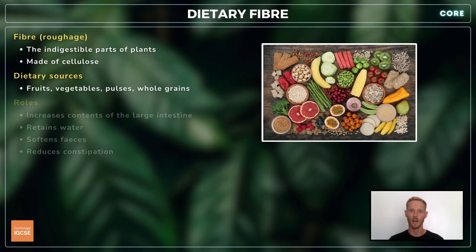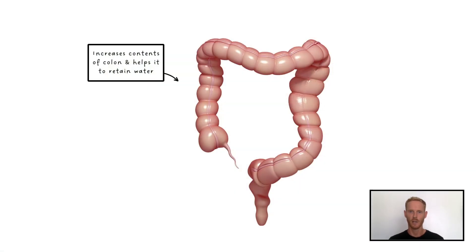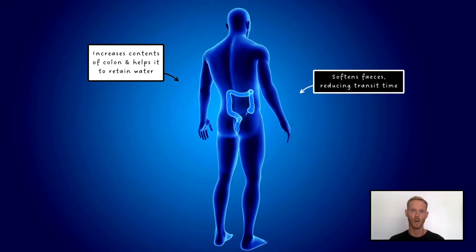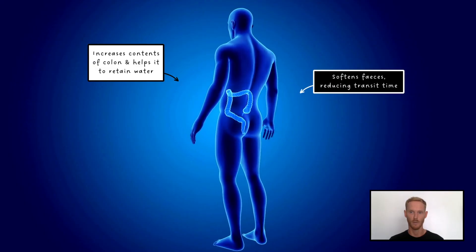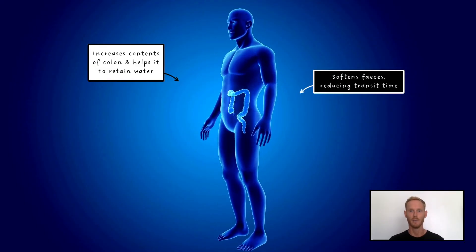Dietary fibre, otherwise known as roughage, is found in various plant foods including fruits, vegetables, and whole grains. Cellulose, which makes up the cell walls in plant cells, cannot be digested as we don't produce the enzymes required to break it down. It increases the contents of the colon and helps it to retain water, which softens the feces and reduces the time it takes for undigested food to pass out of the body. This is thought to reduce constipation and keep the colon healthy.